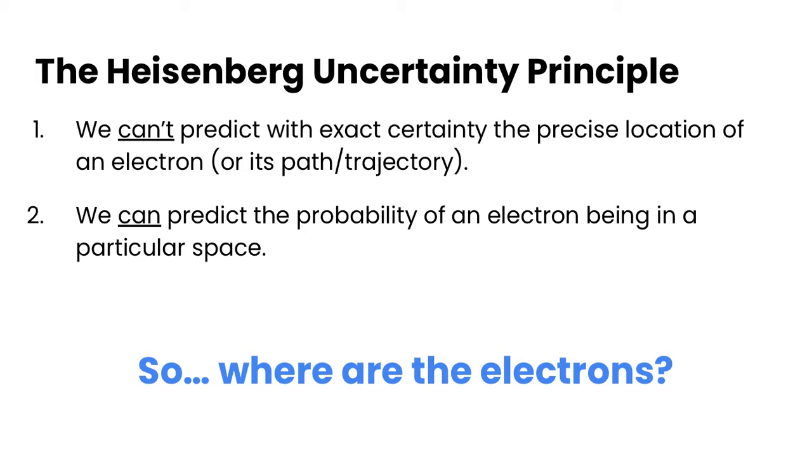After Bohr's model, Heisenberg came along with studies on this wave-particle duality of electrons, and he came up with his uncertainty principle. His uncertainty principle says that we can't predict with exact certainty the precise location of an electron. We can't predict its path or trajectory. We can, however, predict the probability of an electron being in a particular space.